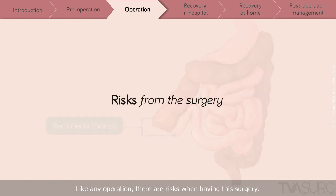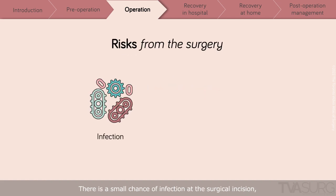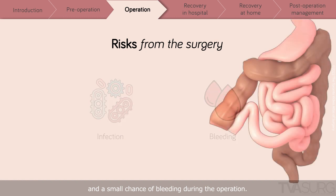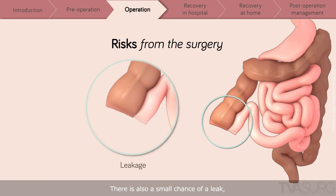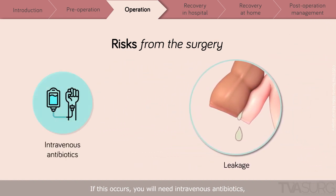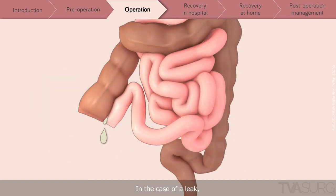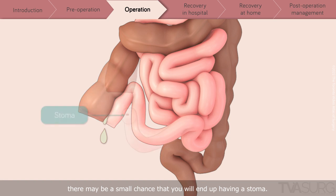Like any operation, there are risks when having this surgery. There is a small chance of infection at the surgical incision. There is also a small chance of bleeding during the operation. There is also a small chance of a leak from the connection between the colon and small intestine. If this occurs, you will need intravenous antibiotics and may require an additional procedure or operation depending on the severity of the leak. In the case of a leak, there may be a small chance that you will end up having a stoma.